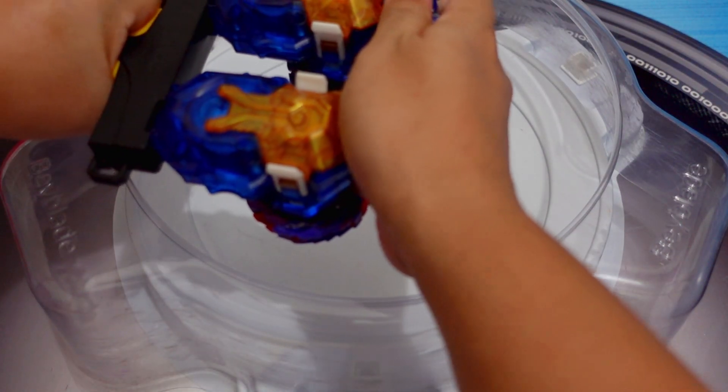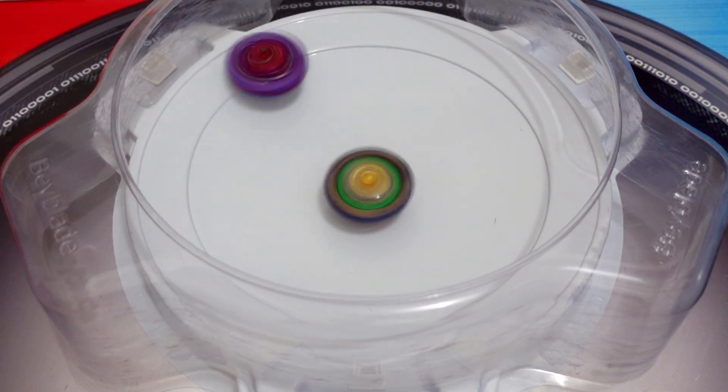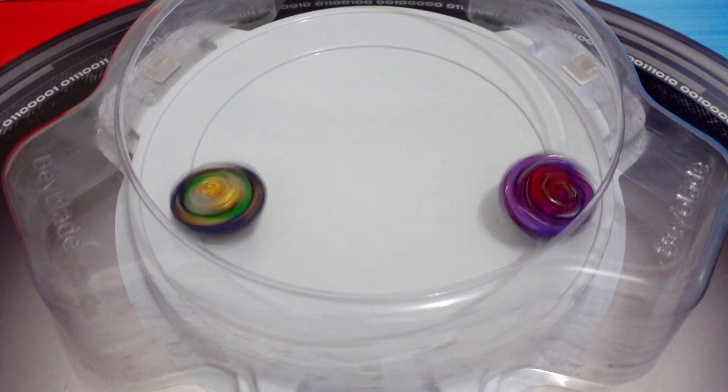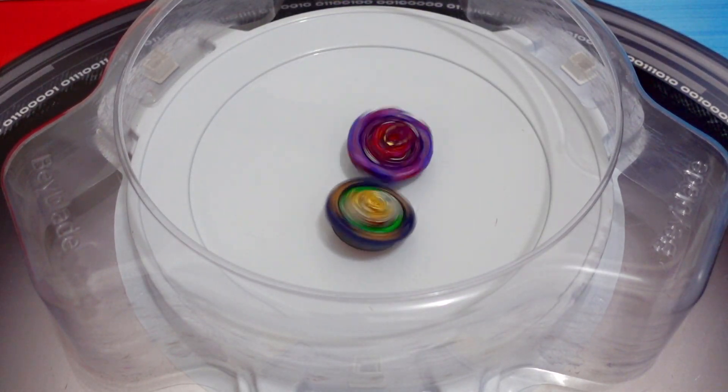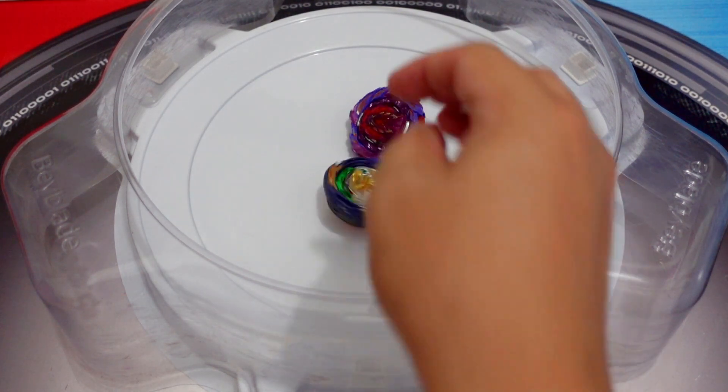B-190 Roar Bamut versus Vanish Fafnir. 3-2-1, go. Wow! Wow! They're both so fast! Oh, winner is Vanish Fafnir.